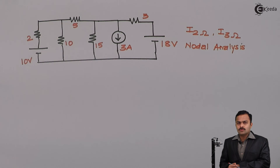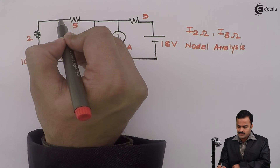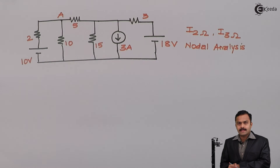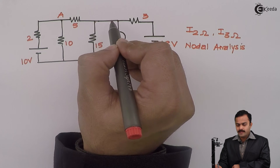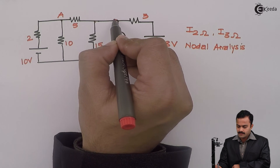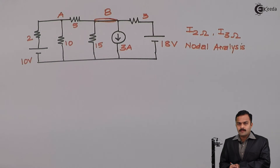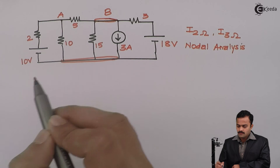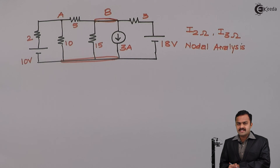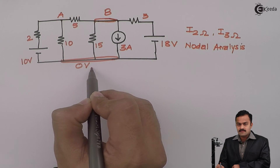The first step is to identify how many nodes are there. This point I will consider as a node because 1, 2, 3 branches are connected — let's mark this as node A. This other point and that point are the same because nothing is connected between them, so I can consider the whole point as node B. Finally, all these branches connected together form a third node which I will consider as the reference node, meaning the voltage of this node is 0.